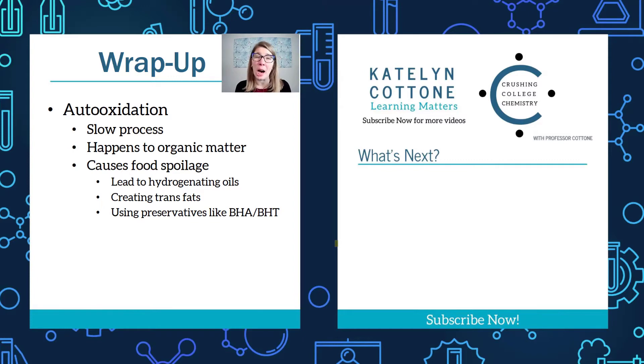Let's wrap up. In this video we talked about auto-oxidation. It's a really slow process that happens with the oxygen in the air and it ends up spoiling or rotting organic things. And of course your food is organic and so it leads to food spoilage. For us to try to circumvent that, the food industry has come up with solutions like hydrogenating oils to prevent the alkene functionality from even being present so that you don't get food spoilage. And by accident we created trans fats. And then also utilizing things like butylated hydroxy anisole and butylated hydroxy toluene as radical scavengers to prevent that radical from reacting with the food at all by first reacting with the radical scavenger and being used as a preservative. Thanks so much for watching. This is Katelyn, signing out.